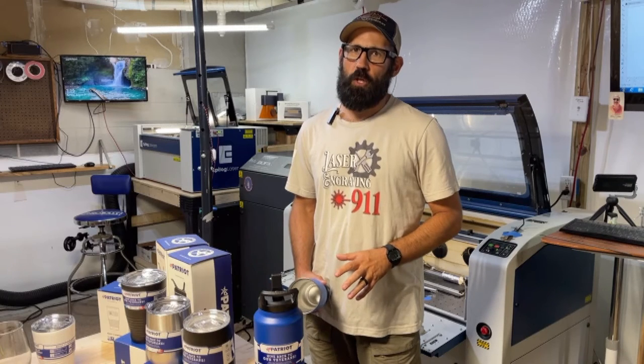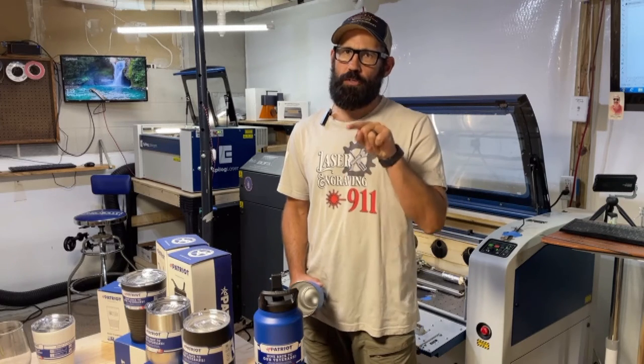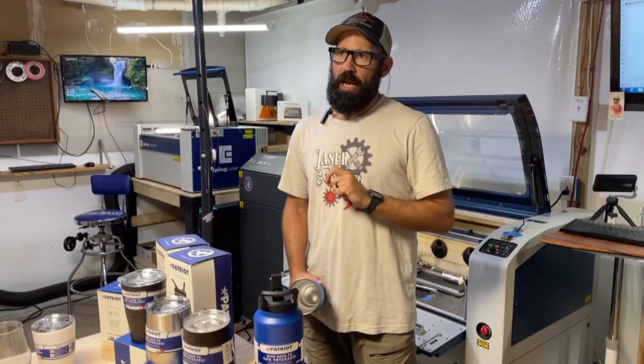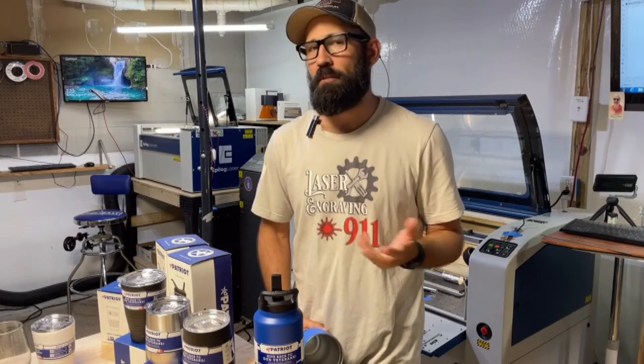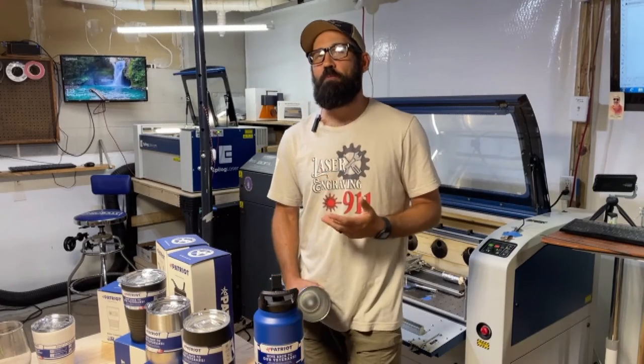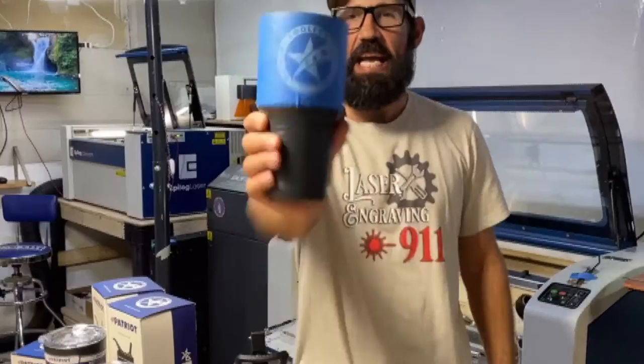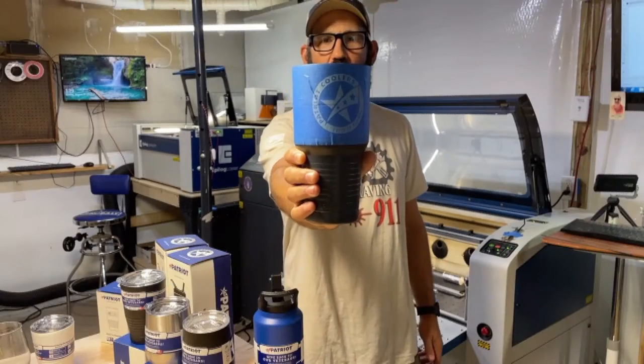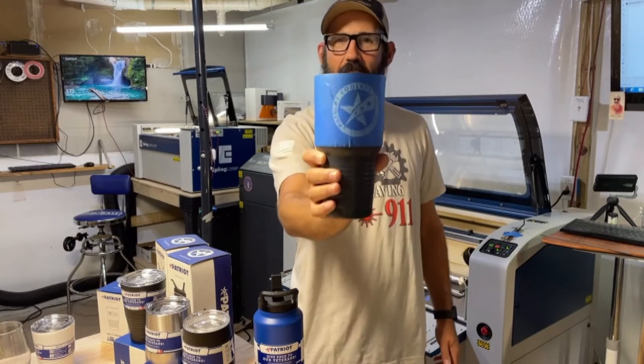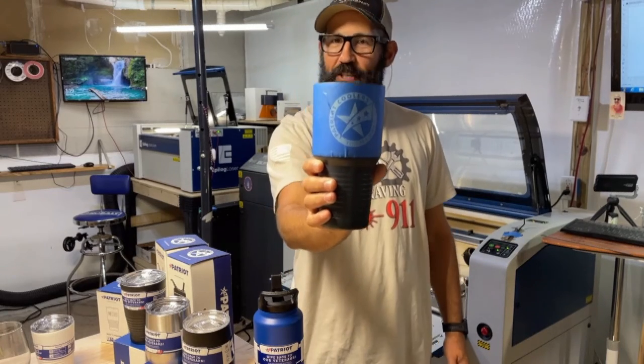We need to talk about circular logos on cups. There is a scourge running through the laser engraving industry where folks are taking customers' round logos and putting them on drinkware, and they end up looking like this—the egg logo. Yes, that's right folks, this is not correct, and I'm going to show you how to fix that.